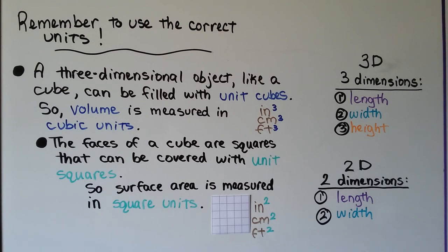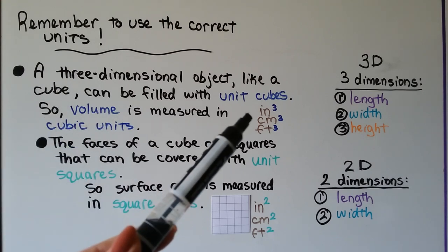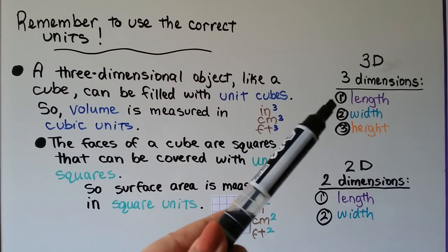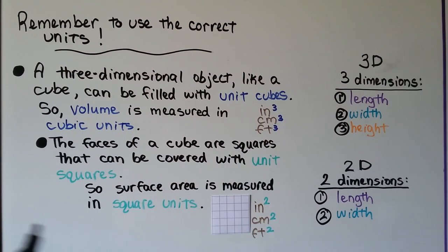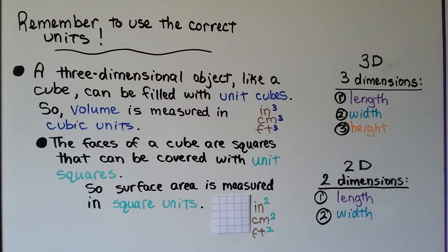Remember to use the correct units. A three-dimensional object like a cube can be filled with unit cubes, so volume is measured in cubic units — inches cubed, centimeters cubed, feet cubed, meters cubed, etc. — because we have three dimensions: length, width, and height, giving us the exponent of three. The faces of a cube are squares covered with unit squares, so surface area is measured in square units with an exponent of two for two dimensions.